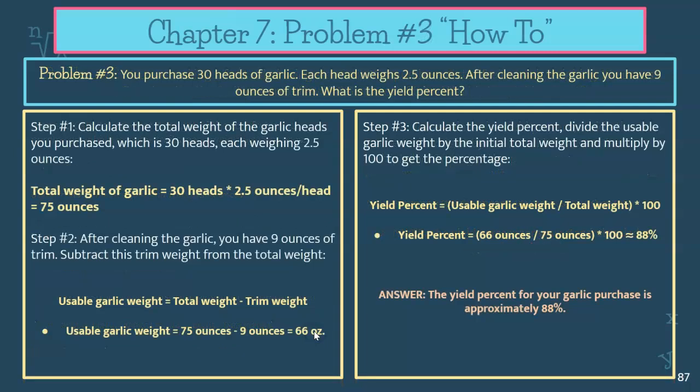Your last problem for Chapter 7, number three: you purchase 30 heads of garlic, each weighing two and a half ounces. After cleaning the garlic, you have nine ounces of trim. What's your yield percent? Same setup — first determine the total weight of garlic you have. Calculate the total as-purchased amount: 30 heads of garlic, each weighing two and a half ounces. Multiply the two together and you have 75 total ounces of as-purchased garlic.